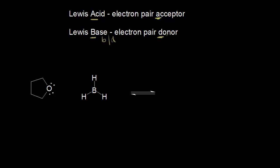Let's look at this reaction: a cyclic ether on the left and borane on the right. Notice there's no octet around boron — it's only surrounded by six electrons, making it very reactive. Boron is sp2 hybridized, which means it has an empty p orbital that is able to accept a pair of electrons. The oxygen on the ether is going to donate a pair of electrons into that empty orbital, forming a bond between the oxygen and the boron. The ether is donating a pair of electrons, so it's our Lewis base, and borane is accepting a pair of electrons, so it's our Lewis acid.